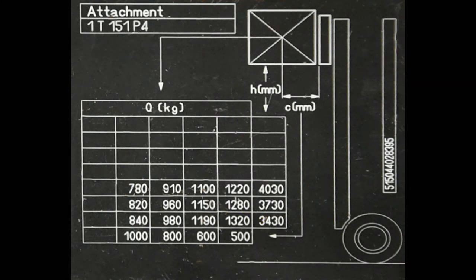And of course every attachment will affect your forklift truck's capacity in some way or another. So you now notice that at a 500 millimeter load center up to and below 3.43 meters, 1.32 ton or 1320 kilos is our maximum.